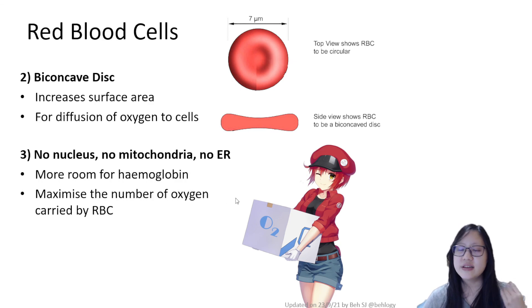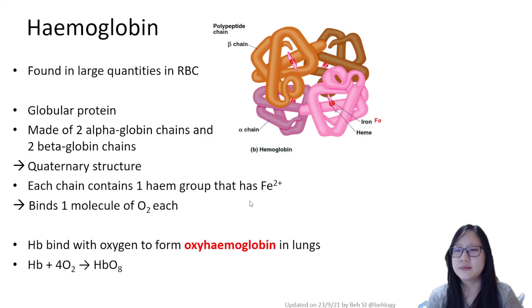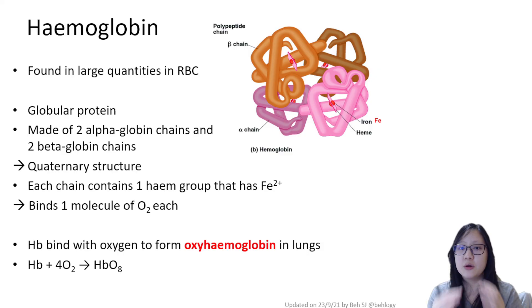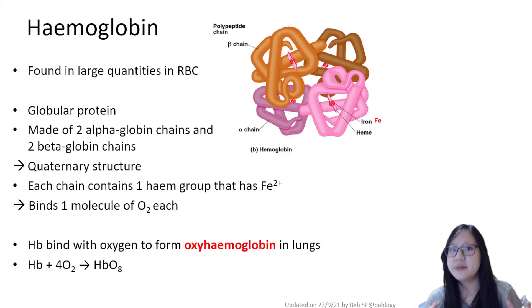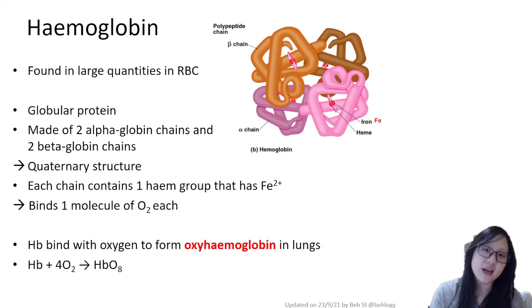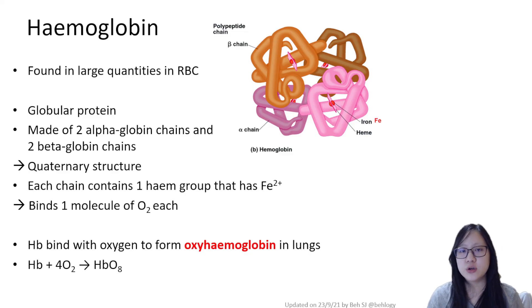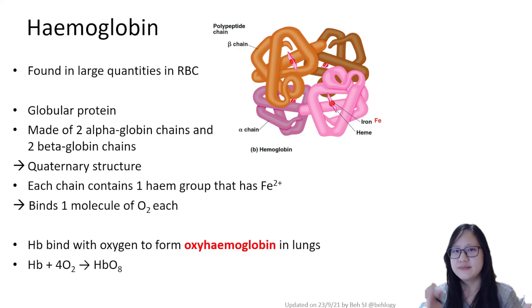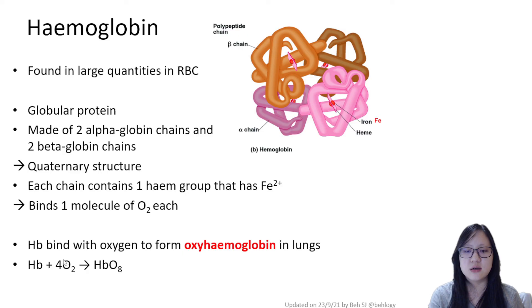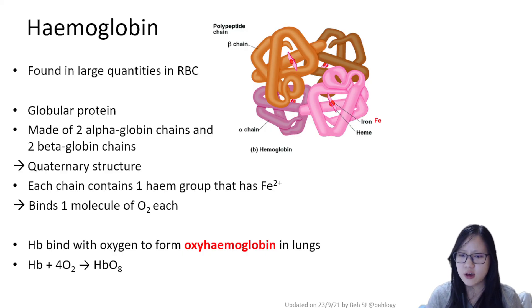Hemoglobin is not the same as a red blood cell — many students confuse this. There are many tiny hemoglobin molecules inside each red blood cell, allowing it to carry many molecules of oxygen. Hemoglobin binds oxygen to form oxyhemoglobin in the lungs, binding four molecules of oxygen. More detail on oxygen and carbon dioxide transport will be covered in the next video.